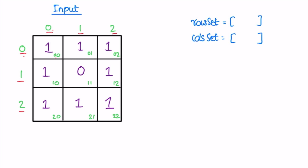The outer for loop represents rows and the inner for loop represents columns. We check if each cell's element is zero. Starting from the beginning — not a zero, not a zero, not a zero. Moving to the next row — not a zero. This element is a zero! We take its row and add it to a set called row set, and we take its column, which is one, and add it to another set called column set. Continuing through the rest of the matrix — no more zeros.